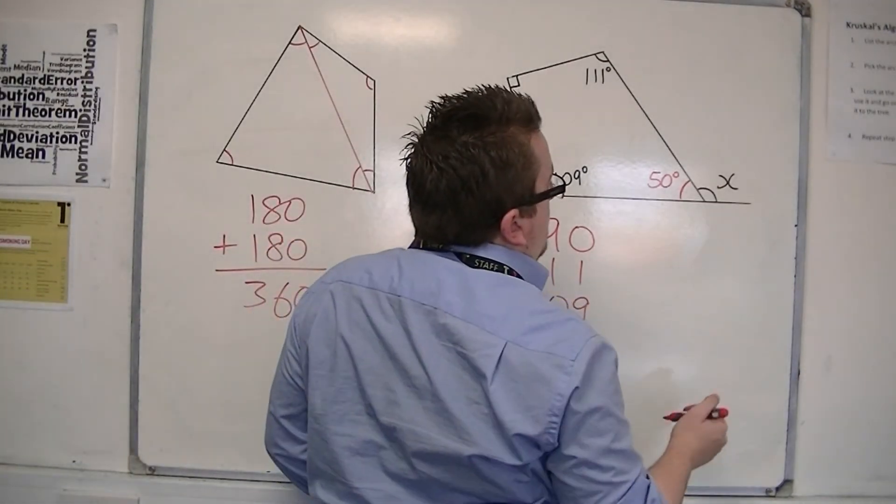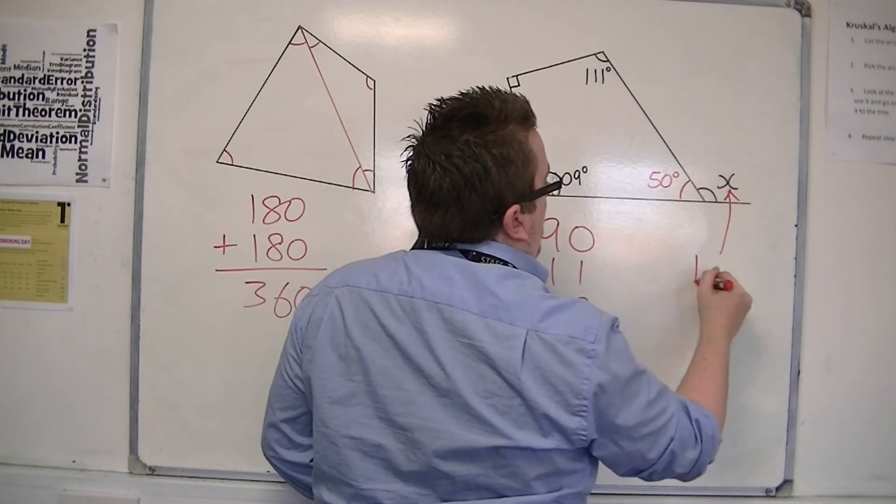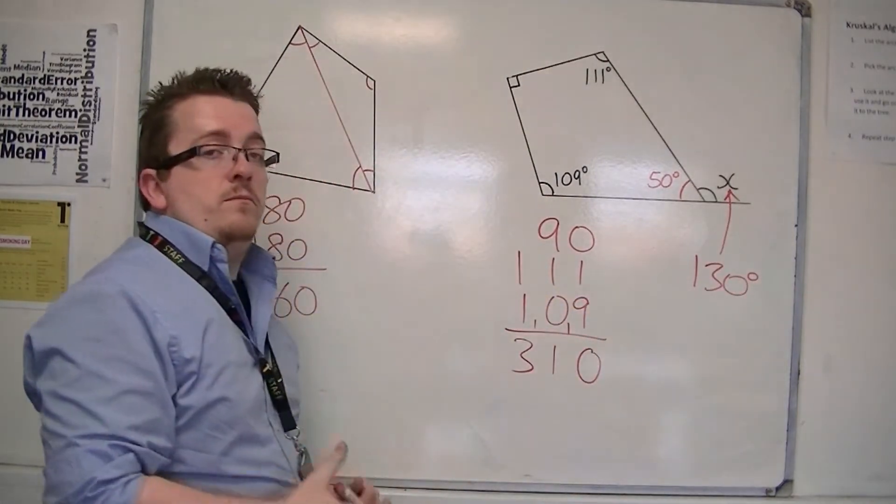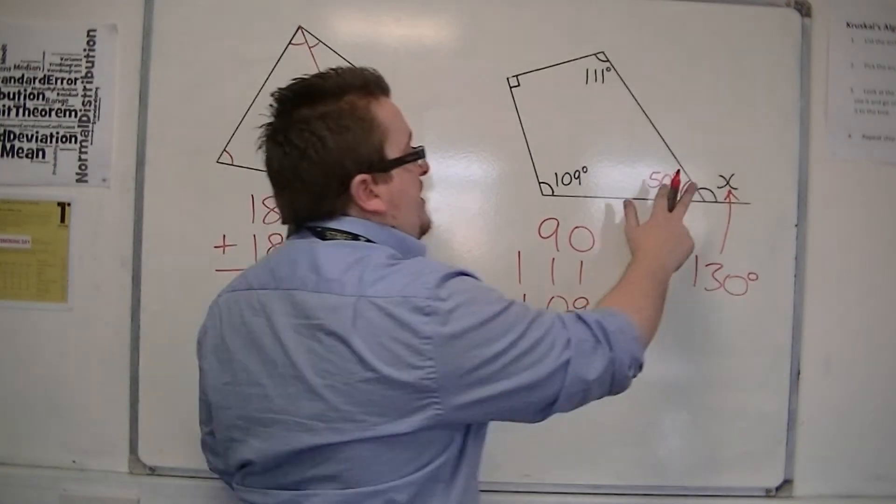So that means that the missing angle is 130 degrees, because the two angles must add up to 180 on a line.